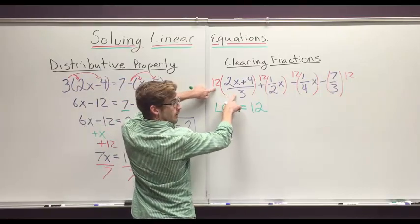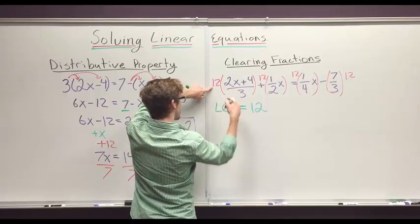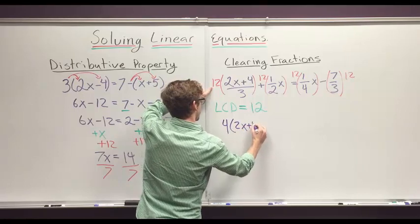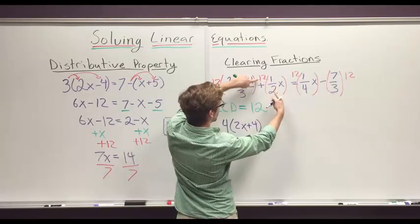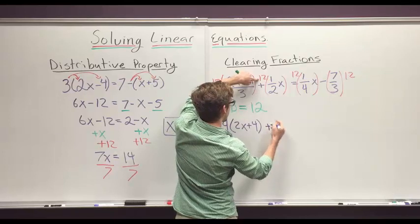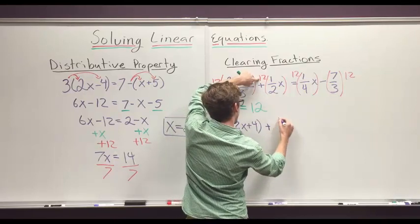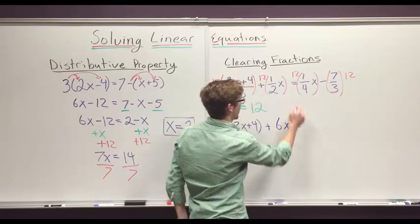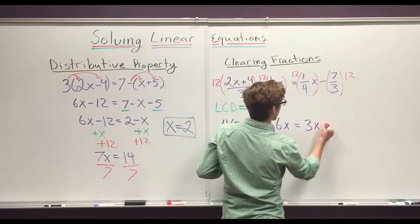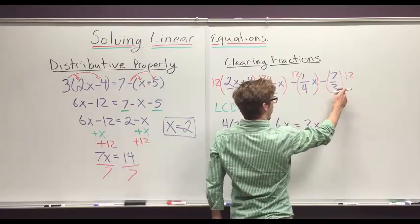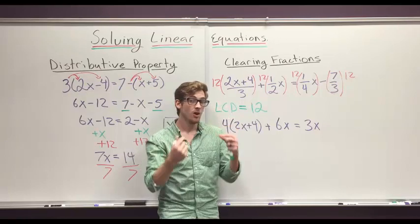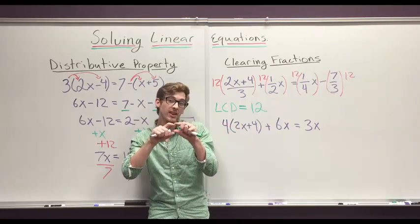Well, 12 and 3 is going to reduce, so 12 divided by 3 is 4. So we have 4 times 2x plus 4. 12 times 1/2 divided by 2 is 6, so we have a plus. Bring it down, 12 times 1/2 is 6. And we have our equal sign. 12 times 1/4, or 12 divided by 4, is 3, so we have 3x. And then 12 times 7/3, well that's really 12 divided by 3 times 7.